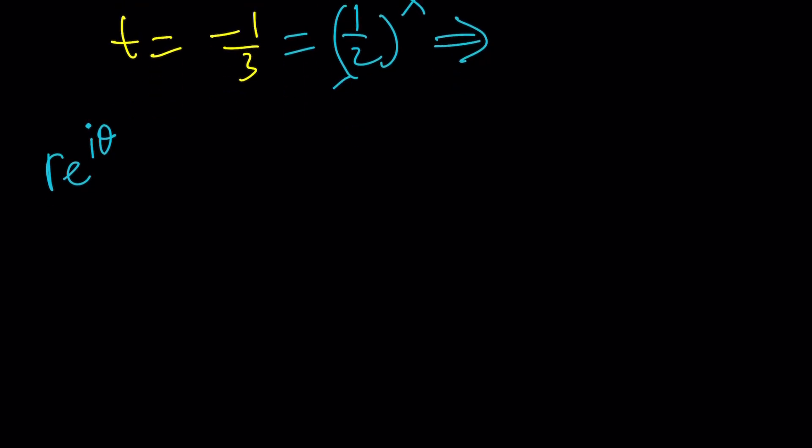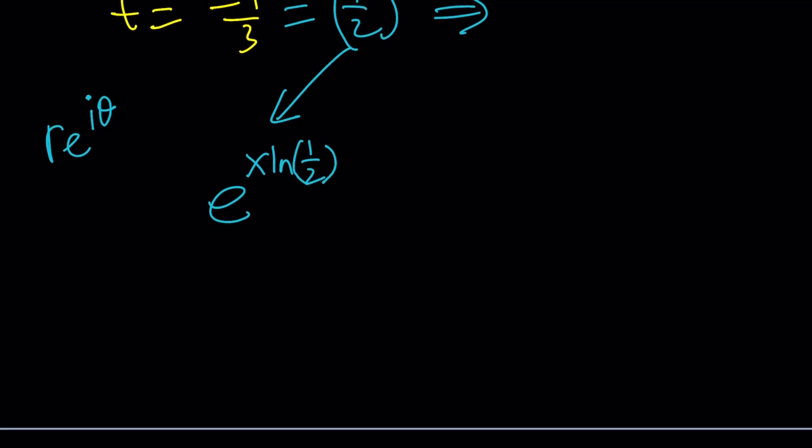Let's write 1 half to the x as e to the power x ln 1 half. That's what it is in the complex world. And then negative 1 third, if you think about negative 1 third in the argand plane, it's going to appear here on the real axis because it's a real number. But its argument is going to be pi because it's on the negative side of the real axis. That makes a huge difference. We can write this number as 1 third times e to the power i times pi. Pi is the argument, but that's just the principal argument. If you want all the solutions, you can add 2 pi n to this, but I want to stick to the principal solution.